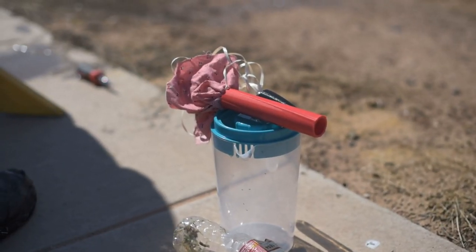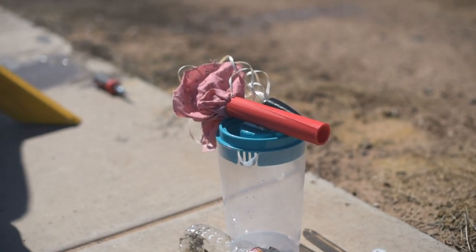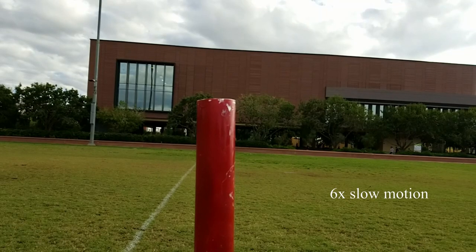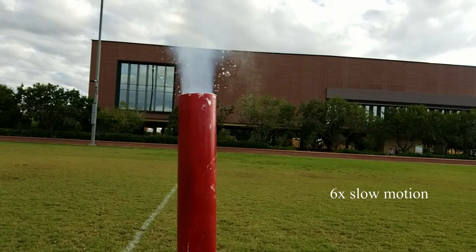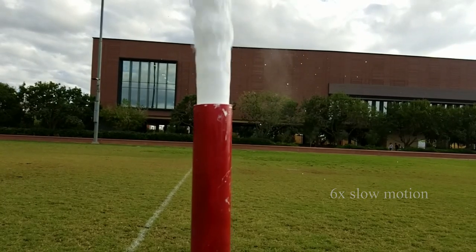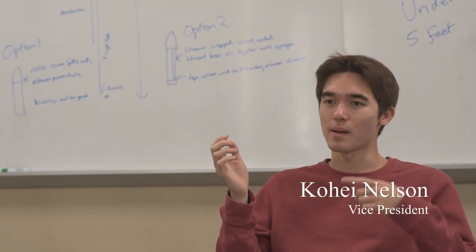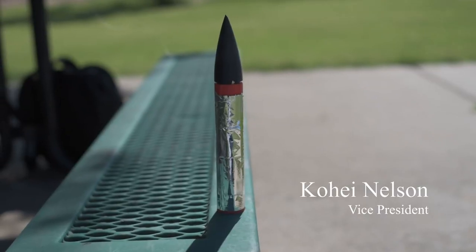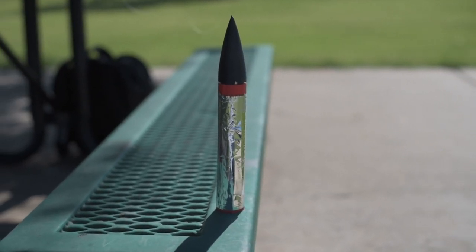We used a detachable head on the rocket and had the parachute come out that way, but it wasn't very reliable. Packing the parachute was way more difficult than we thought. So we had a second design where we wrapped a Mylar blanket around the rocket that would catch the wind as it fell and slow down the rocket enough.